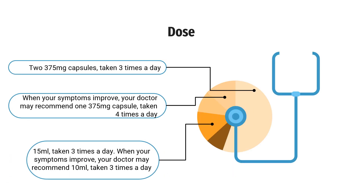Dose — the usual dose for adults is: Capsules: 2 × 375 mg capsules taken 3 times a day; when symptoms improve, your doctor may recommend 1 × 375 mg capsule taken 4 times a day. Syrup: 15 ml taken 3 times a day; when symptoms improve, 10 ml taken 3 times a day. Liquid in sachets: 1 sachet taken 3 times a day; when symptoms improve, 1 sachet taken 2 times a day. Liquid in bottles: 15 ml taken 3 times a day; when symptoms improve, 10 ml taken 3 times a day. The liquid and syrup contain 250 mg of carbocysteine per 5 ml; sachets contain 750 mg per 10 ml.